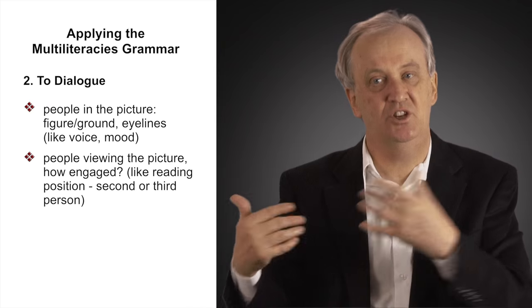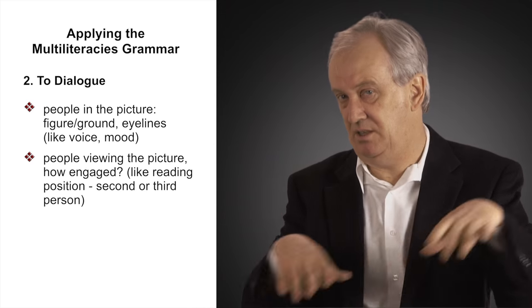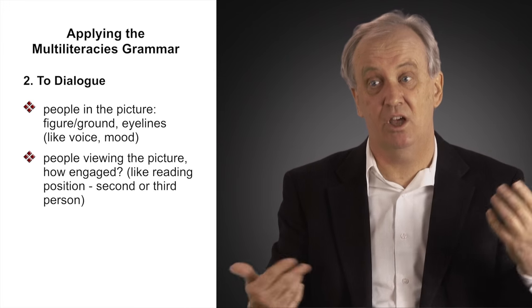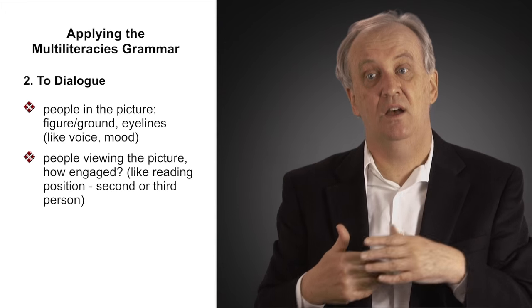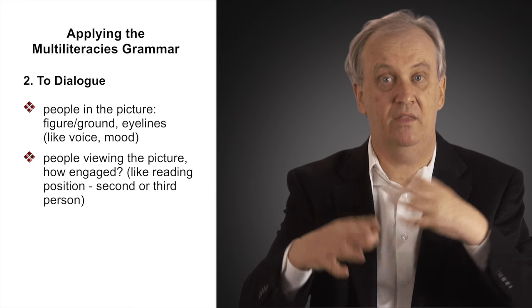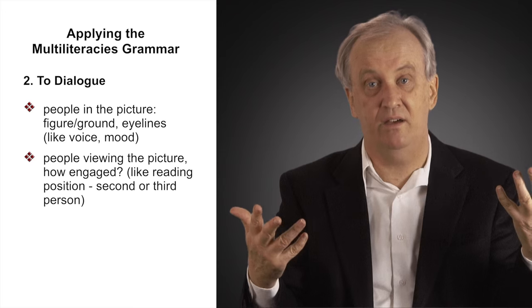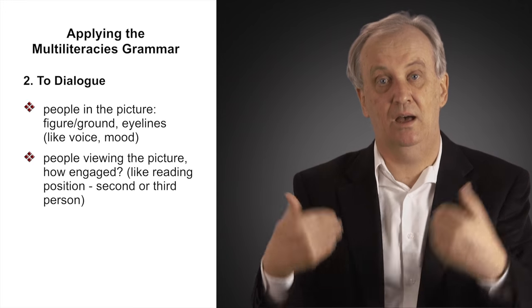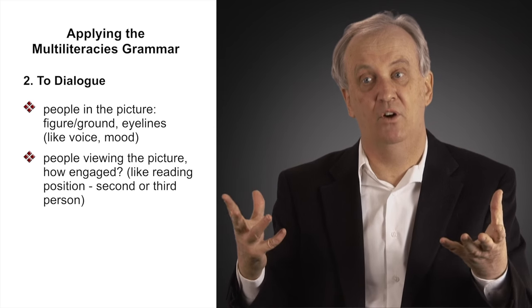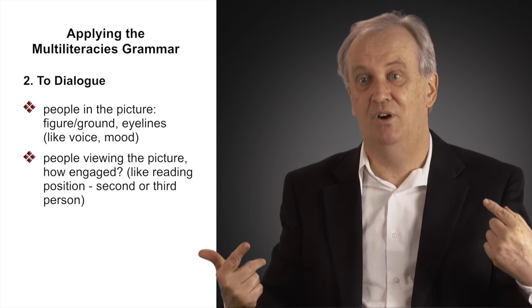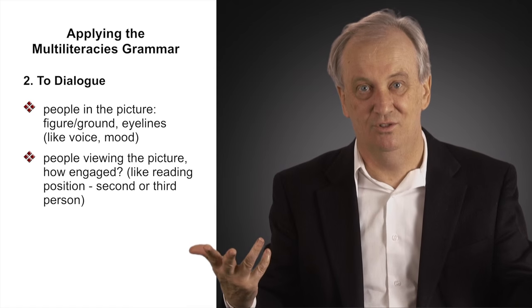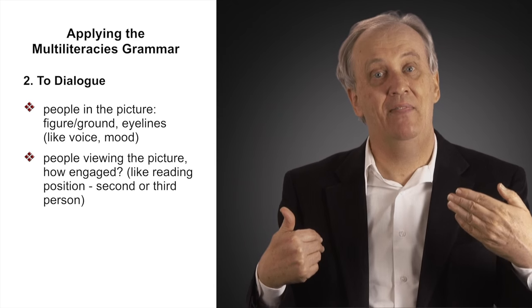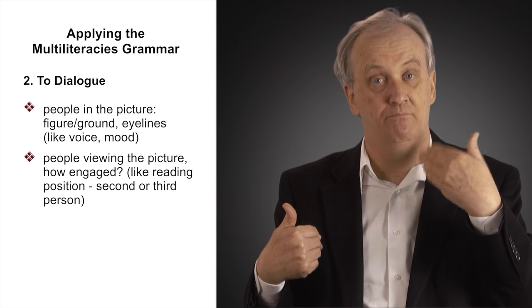That's the first of our five questions about meaning, that's referring to things. What about the second one which is to dialogue? Well, as it turns out, the picture that I showed you, the Eiffel Tower didn't have any people in it but there might have been people in it relating to each other. There is figure and there is ground in those things. There are eye lines, the way people are looking at each other, that constructs relationships within an image when there are people involved. But even when there are not people involved, there are people involved, which is the person who took the camera, which is their eye, their angle, and the person viewing the picture.